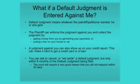You may be wondering: what if a default judgment is entered against me? A default judgment means that whatever the plaintiff or petitioner wanted, they got. The plaintiff can enforce that judgment against you and collect on it. A judgment against you can show up on your credit report and make it hard to get a credit card or a loan. You can ask the court to set aside or cancel the default judgment, but only within six months of when the judgment was entered. The court will require a very good reason for why you did not respond within the 30 days.